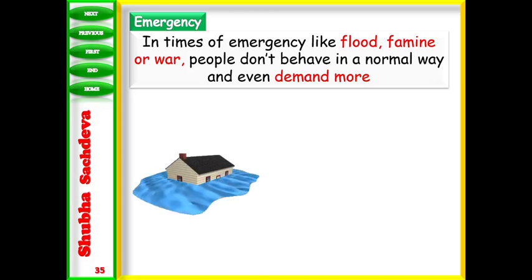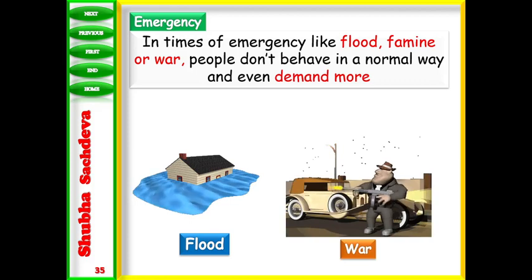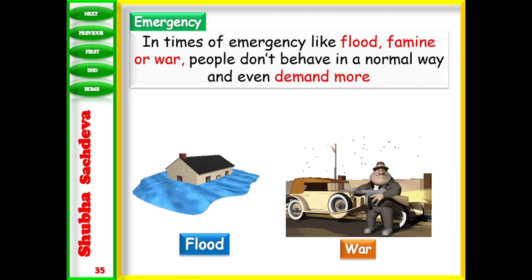In case of emergency, flood, famine or war, people will not behave in normal way. They need things desperately - they need food during a flood. During war, all things become expensive but they have to pay whatever is needed. Demand will not decrease. At this point, law will not work.